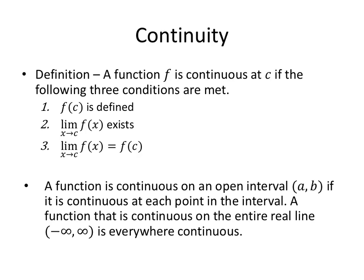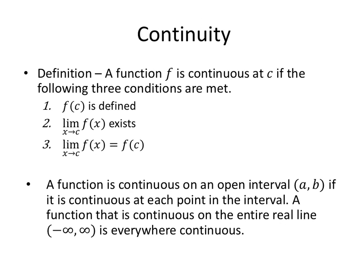A function f is continuous at c if the following three conditions are met. First of all, f of c has to be defined — we have to be able to find a value. The limit has to exist, and if you watched part one of this section you know that means the limit from the right must equal the limit from the left. Not only does the limit have to exist and the function value have to be defined, but they must be equal to each other.